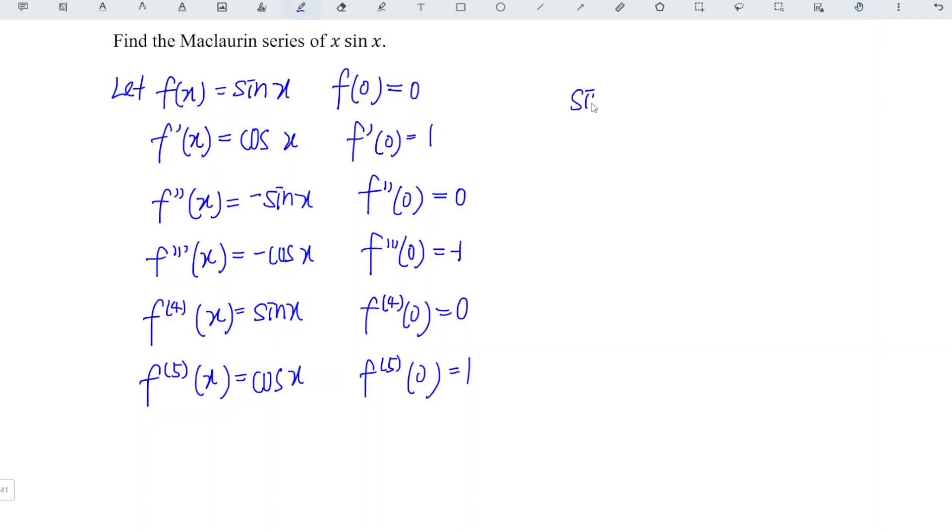So sine x is equal to, this is the first derivative. First derivative means we divide by 1 factorial since it's first. Then the unknown we use is x to the power of 1. The value here is 1. Then we plus, this is the third derivative. Third derivative means 3 factorial, x to the power of 3, and the associated value is negative 1.